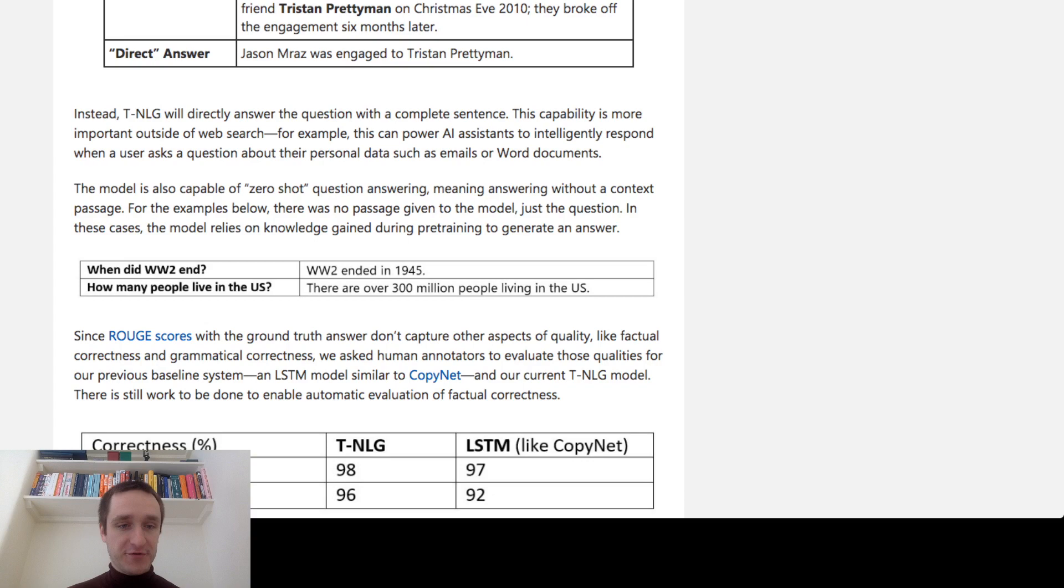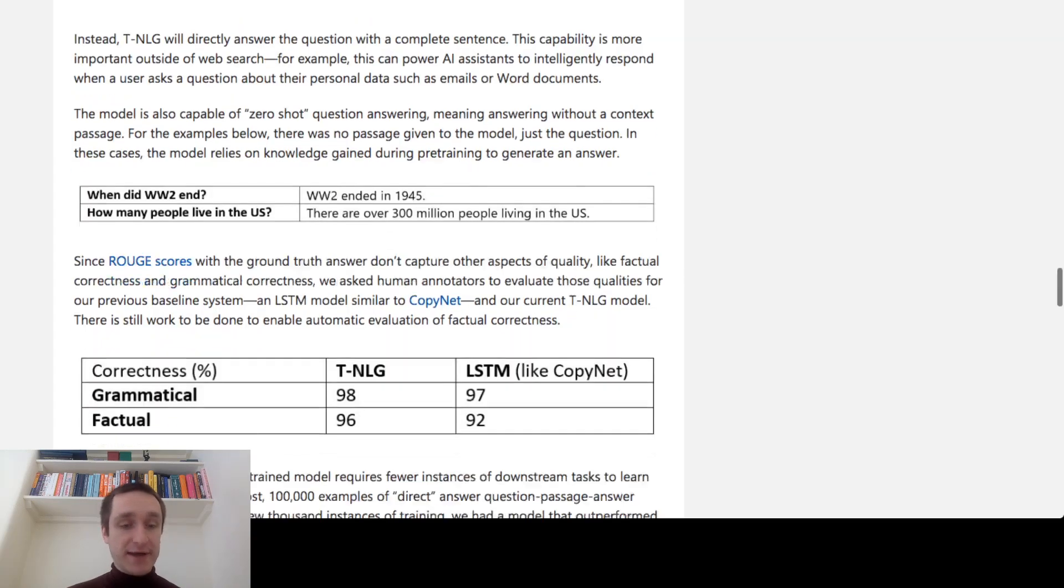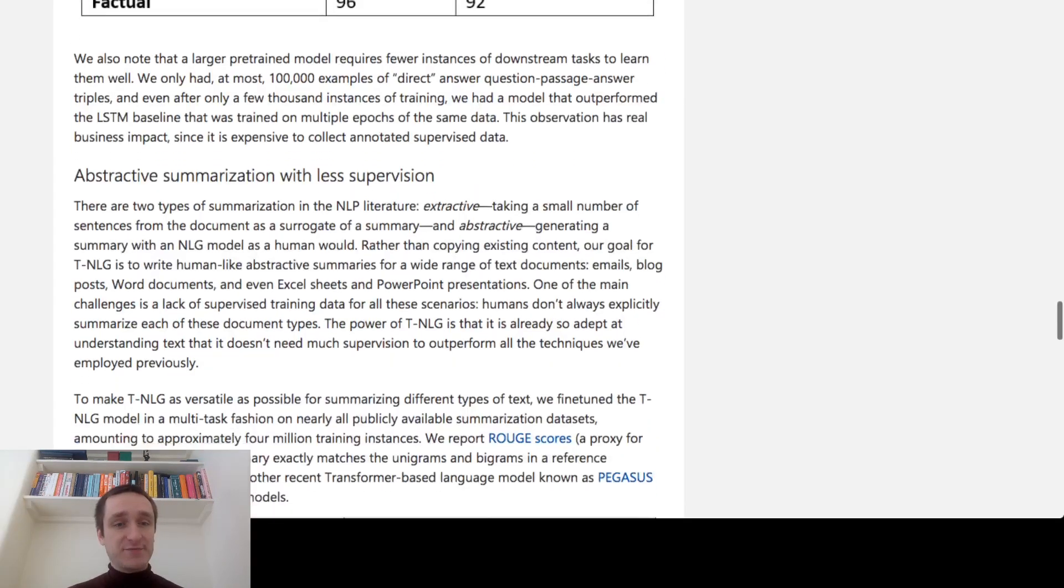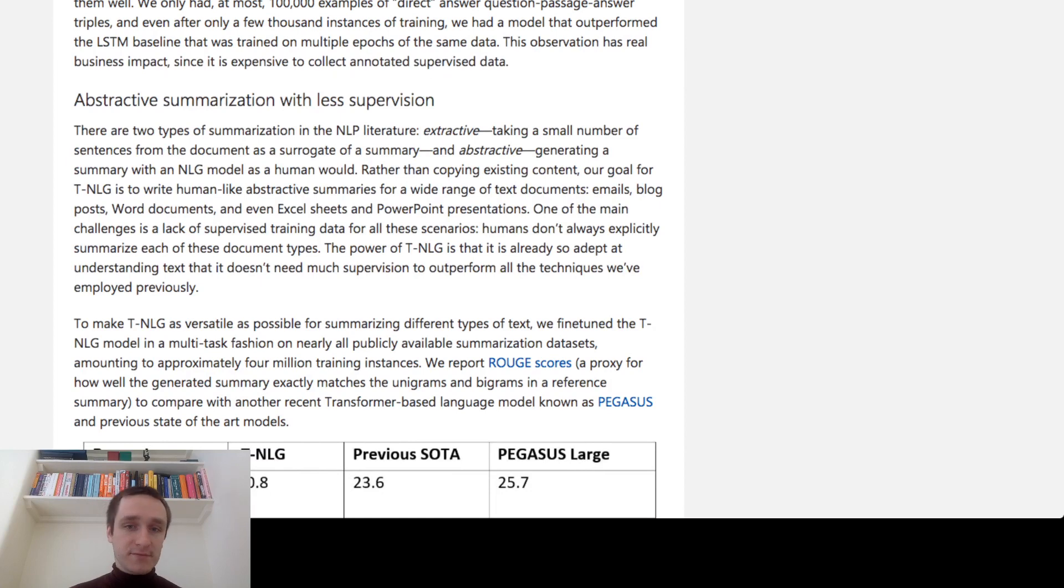That's really great. Another thing is abstractive summarization. You can have both extractive and abstractive summarization. Extractive summarization is probably the most common—it's just taking a bunch of sentences from the original document as a summary.